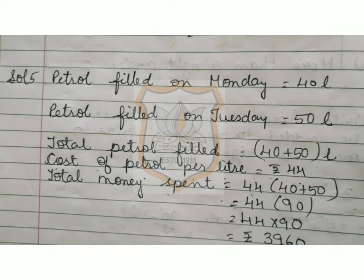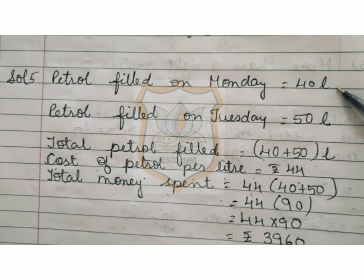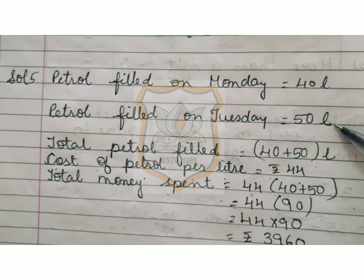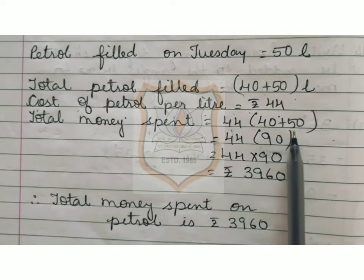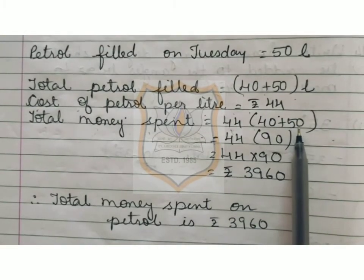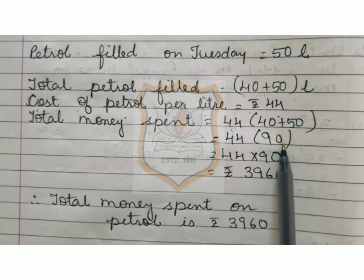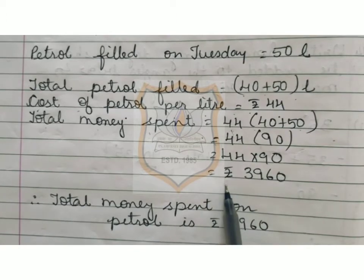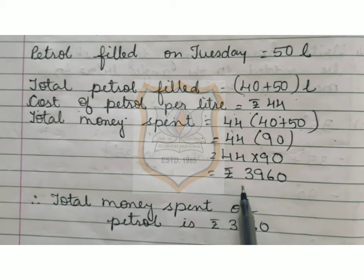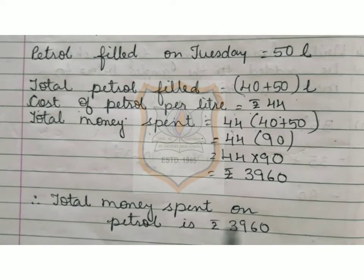Because on Monday the rate of petrol was 44, and on Tuesday also the rate of petrol was 44. So now we add 40 and 50; by adding both these numbers we get 90. Now we multiply 44 by 90, and by multiplying these two numbers we get the answer 3,960. So total money spent on petrol is Rs. 3,960.